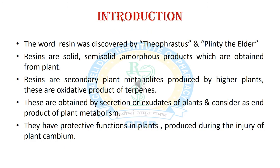Now we will discuss the introduction of resins. The word resin was discovered by Theophrastus and Pliny the Elder. Resins are solid, semi-solid, amorphous products which are obtained from plants. These are secondary plant metabolites and are oxidative products of terpenes. They are obtained from secretions of plants, have a protective function in plants, and have different types of biological activities in human beings.